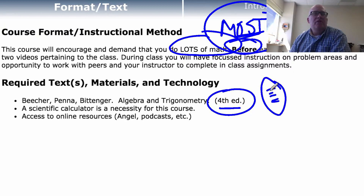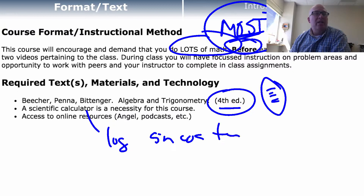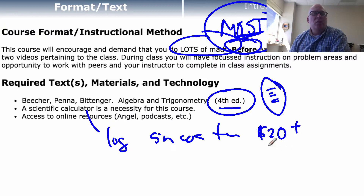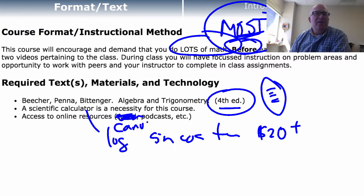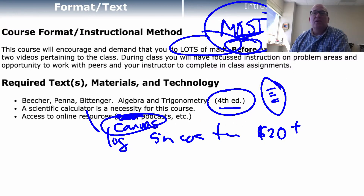You also need to have a scientific calculator, specifically one with a log button and sine, cosine, and tangent buttons. Most basic scientific calculators will work — I would get one that is worth at least $20, because cheaper ones are sometimes old format and don't work as well. Also, you need to have access to the online resources. Not Angel — our new one is called Canvas. Make sure that you have access to the Canvas resources and I'll talk more about those in a minute.